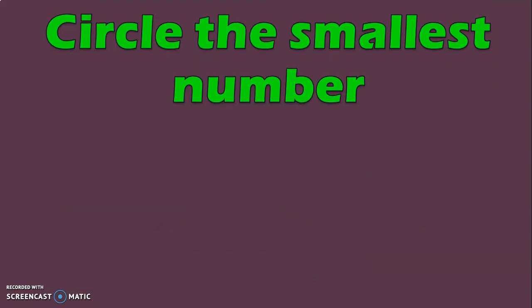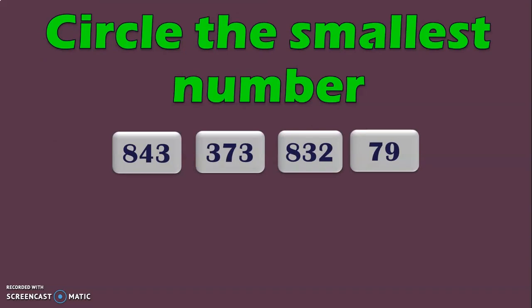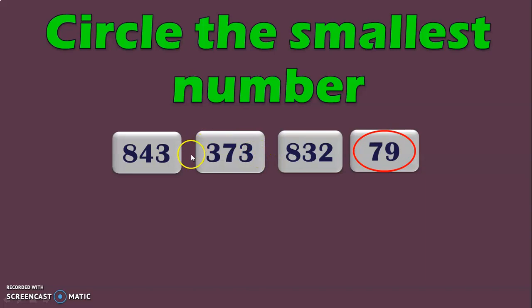First, let us begin with finding the smallest number. Circle the smallest number in the given 4 numbers. Here we have 3 three-digit numbers and 1 two-digit number. By looking at this, we can say that 79 is the smallest number because a 2-digit number is always lesser than a 3-digit number. So put a circle around the number 79.